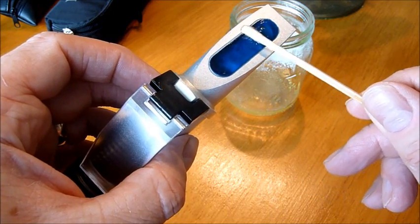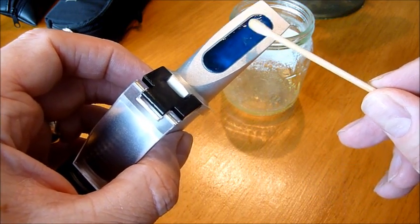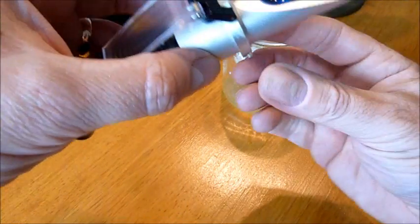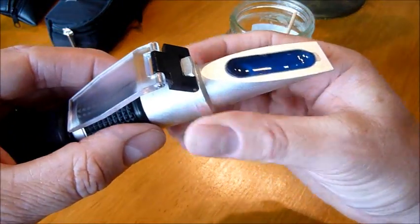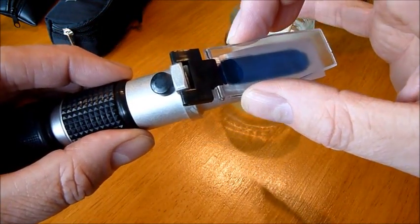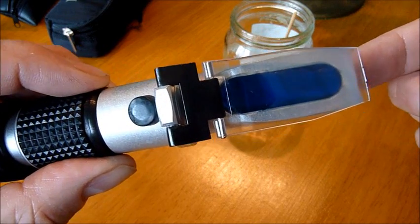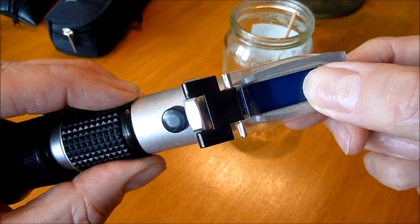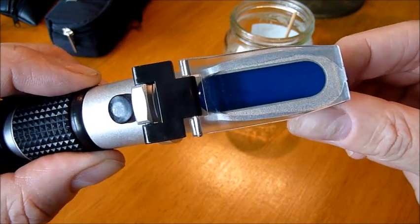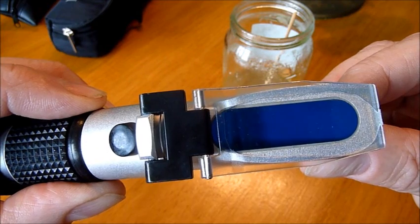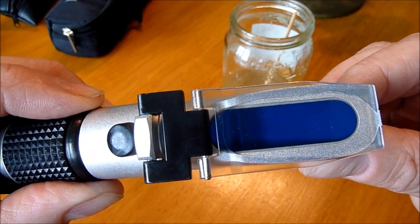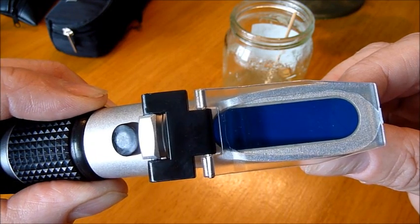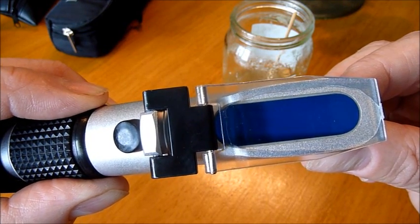The one thing you definitely don't want is any air bubbles because what you're interested in measuring is the interface between the honey and the prism which is where you get your refractive index from. Now hopefully you can see this as you push the cover plate down. I'm pushing honey out around the prism and I've got a full contact between the honey and the prism. That should ensure that there's no air bubbles. That should give us a good clear defined reading.